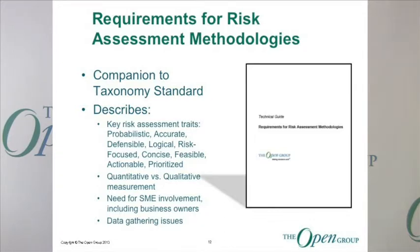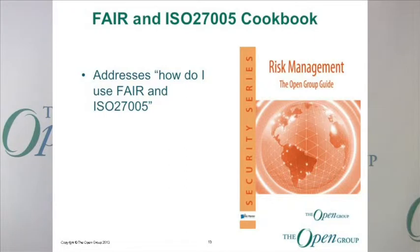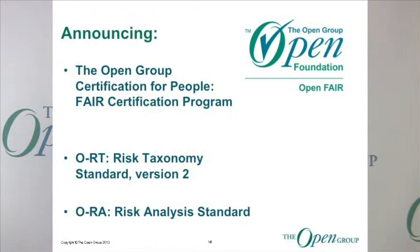The Requirements for Risk Assessment Methodologies is a companion guide that gets into things like quantitative versus qualitative measurement, the need for subject matter expert involvement in doing effective risk analysis, and data gathering issues around where you find data to base your risk decisions on. The ISO 27005 cookbook addresses the question: if I want to use a detailed quantitative risk analysis methodology in the context of ISO 27005, how do I do that — how do I relate the terms gathered in a FAIR-based risk analysis to those same things in ISO?